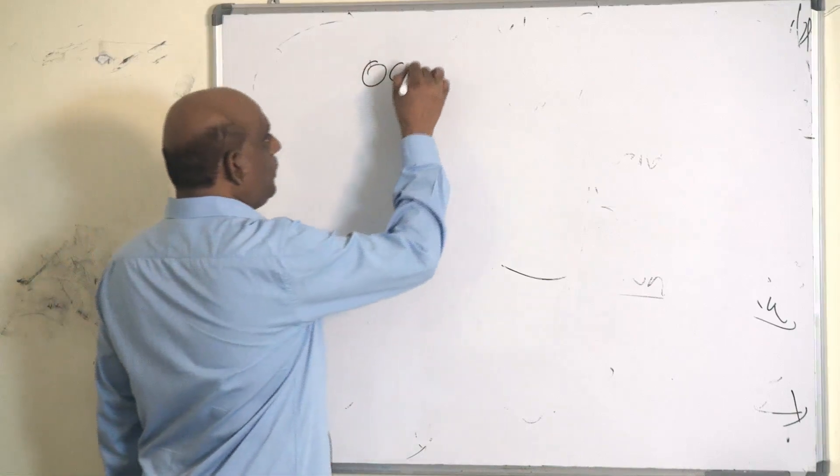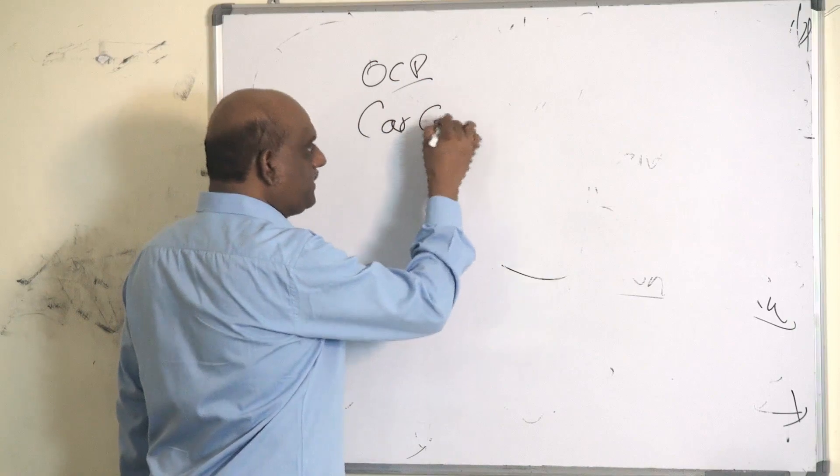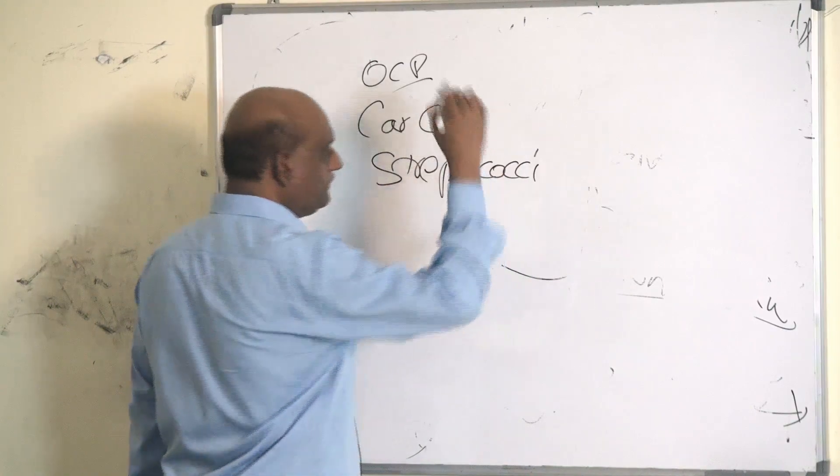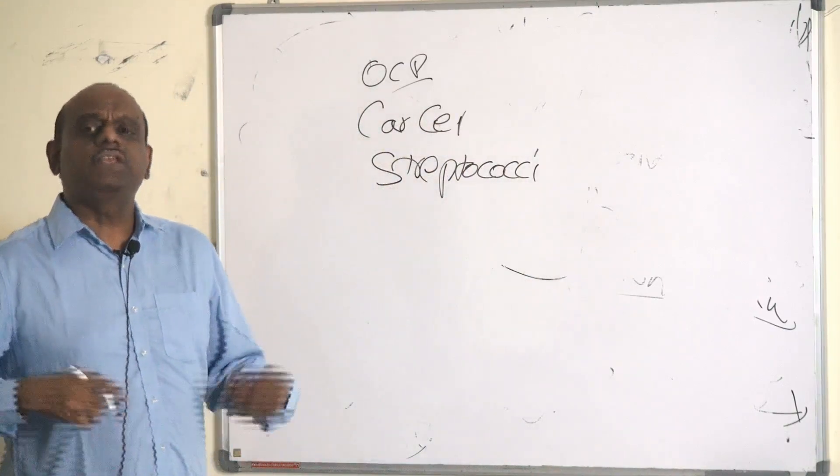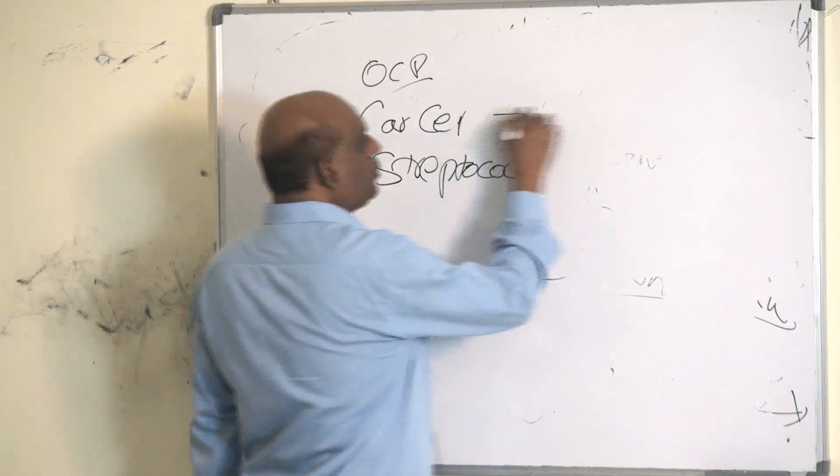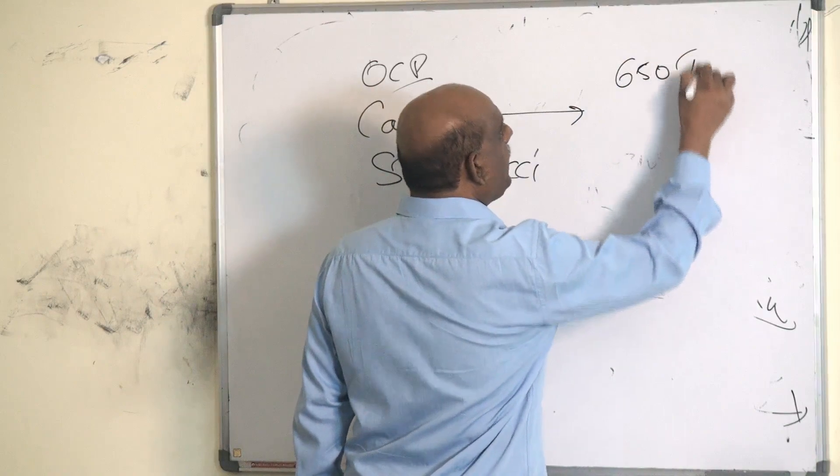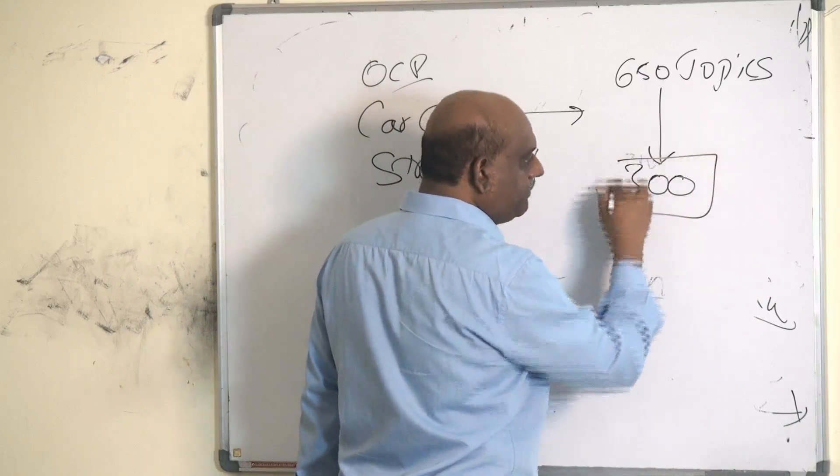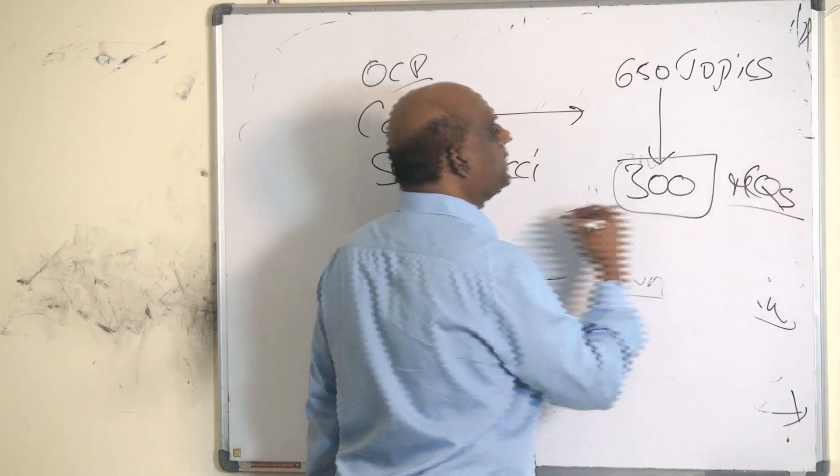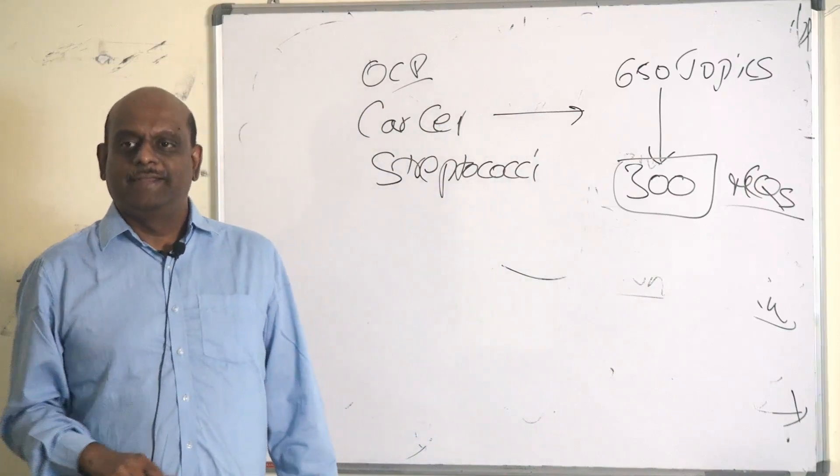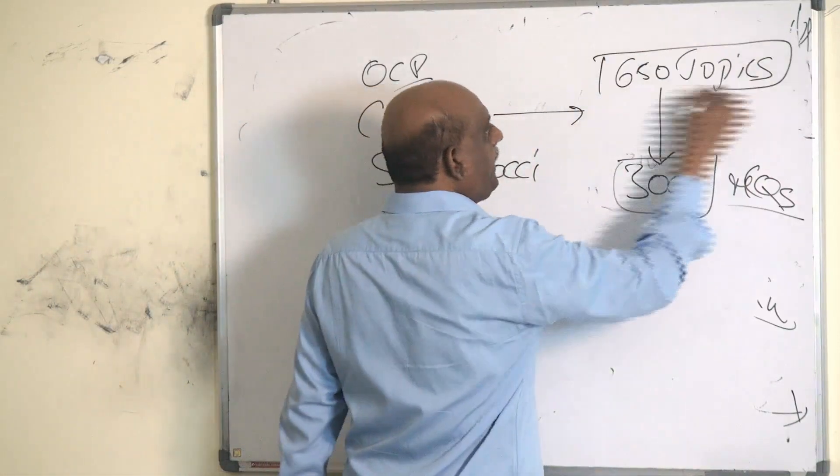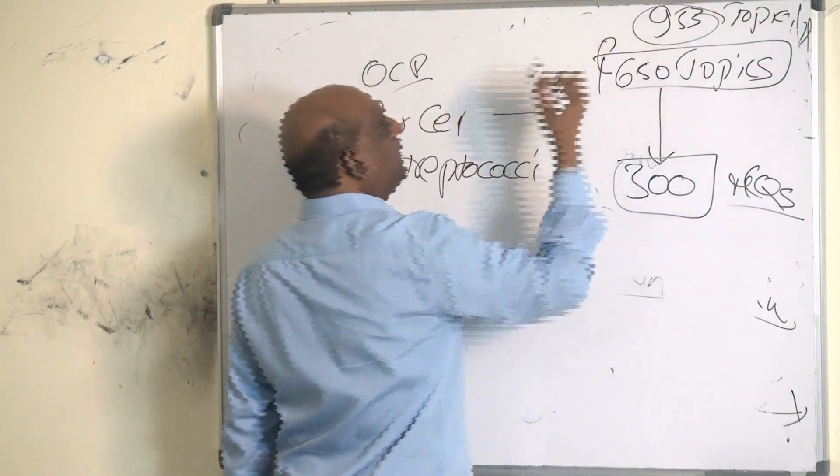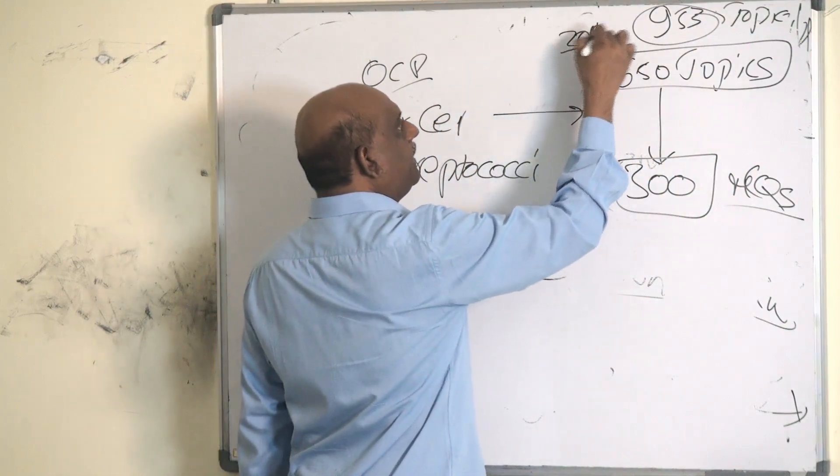He will ask about oral contraceptive pills, carcinoma cervix, streptococci. He will ask about very standard things. So totally there are 650 topics from which 300 MCQs in the entrance are invariably asked. This 650 topics belong to a 953 topic superset, that means around 300 topics are optional.